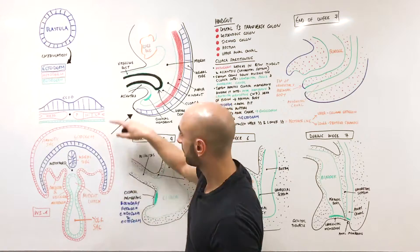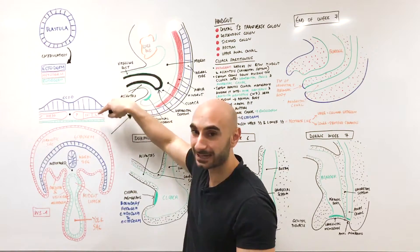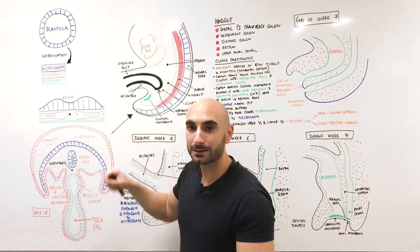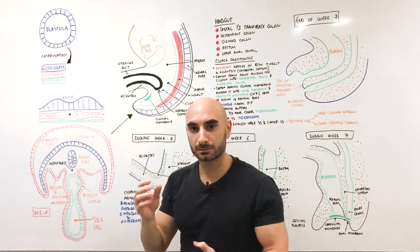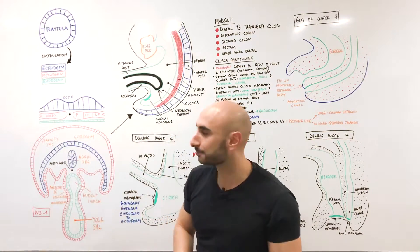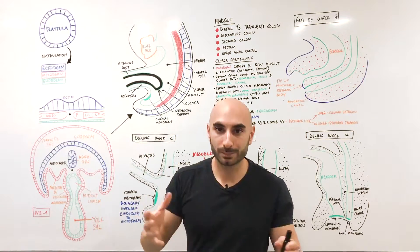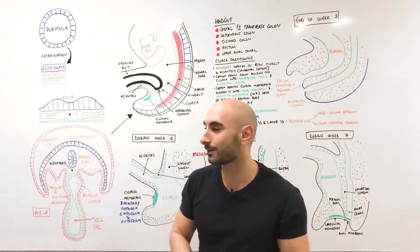There are two lateral plate mesoderms. The higher one in this case is the somatic or parietal mesoderm, and the lower one is the splanchnic or visceral. This gives a hint as to what they'll become. The parietal mesoderm will give rise to the parietal peritoneum, and the visceral mesoderm will give rise to the visceral peritoneum.